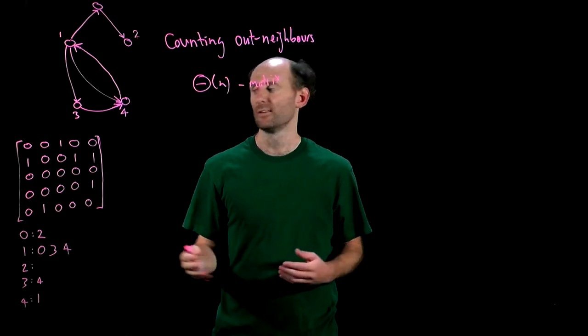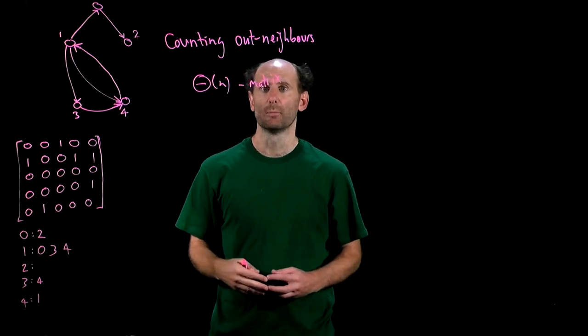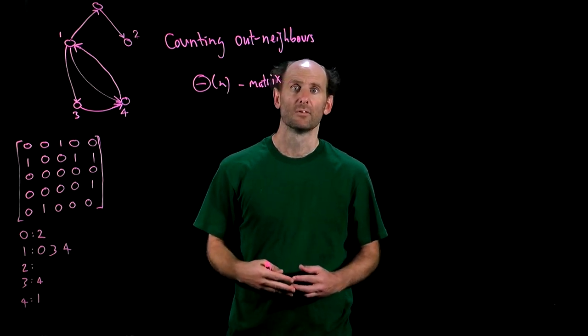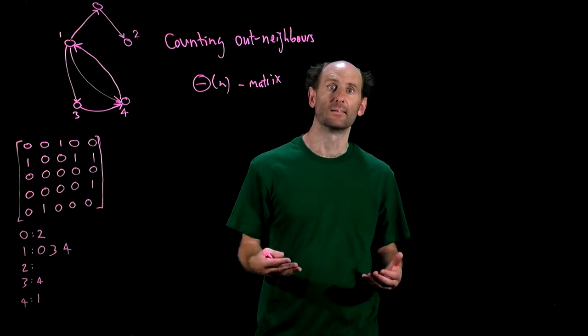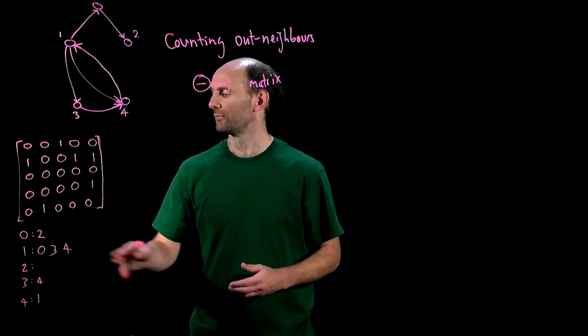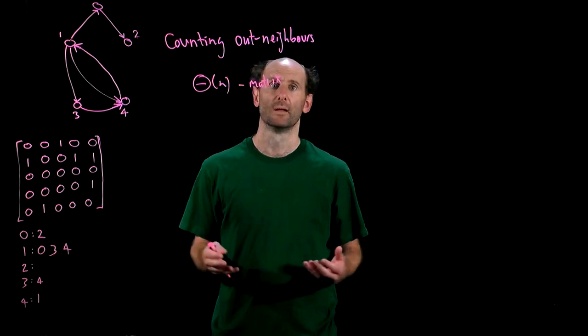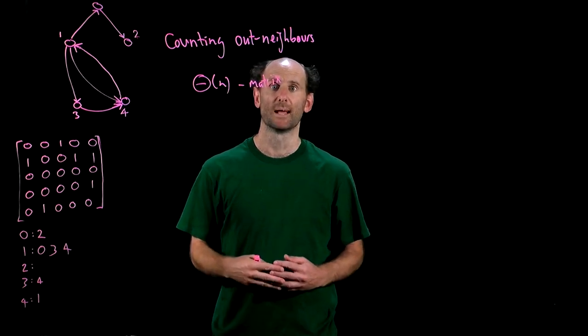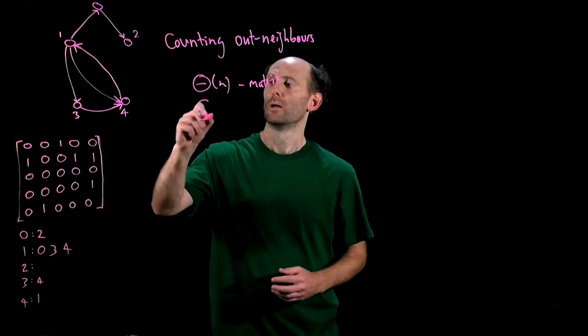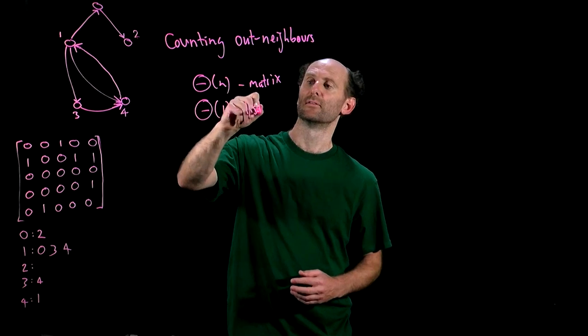In the adjacency list representation the out neighbours of node i are exactly what are listed in the i-th adjacency list. So we just need to find the length of that list. So to find the number of out neighbours of node 1 here we just need to look at how many items are in that list. And for standard implementations of a list we can find its length in constant time. So we have big theta 1 for the list representation.